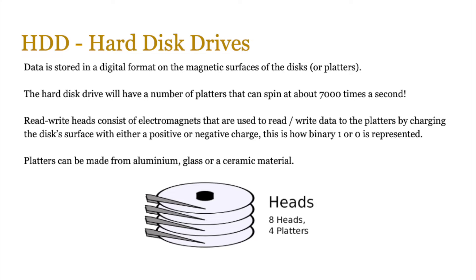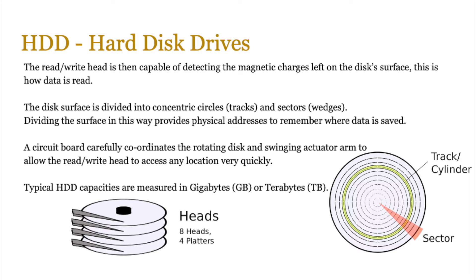Read-write heads consist of electromagnets that are used to read or write data to the platters by charging the disk surface with either a positive or a negative charge — this is how a binary 1 or 0 is represented. There's a lot of movement going on: the disks are spinning, the read and write heads are moving, so hard disk drives tend to be more fragile compared to other types of storage devices. The platters can be made from aluminium, glass or ceramic materials. The read-write head detects the magnetic charges left on the disk surface, and to do that, the disk surface is divided into concentric circles called tracks and sectors, which is basically a wedge on that track.